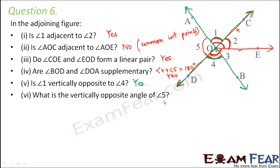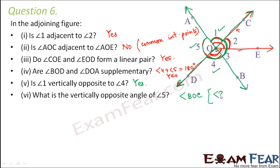What is the vertically opposite angle of angle 5? The same two lines AB and CD, when they intersect, form two sets of vertically opposite angles — one set is angle 1 and angle 4, the other would be angle 5 and the total angle on the opposite side. So the vertically opposite angle of angle 5 is angle BOC, which is actually angle 2 plus angle 3. This is how you approach questions related to different types of angles.